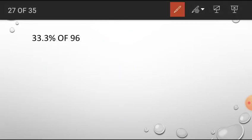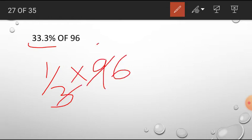And next problem is 33.3 percent of 96. What is the value of 33.3 percent? That is 1 by 3, right? 1 by 3 of 96 is 3 times and 2 times, so answer is 32.